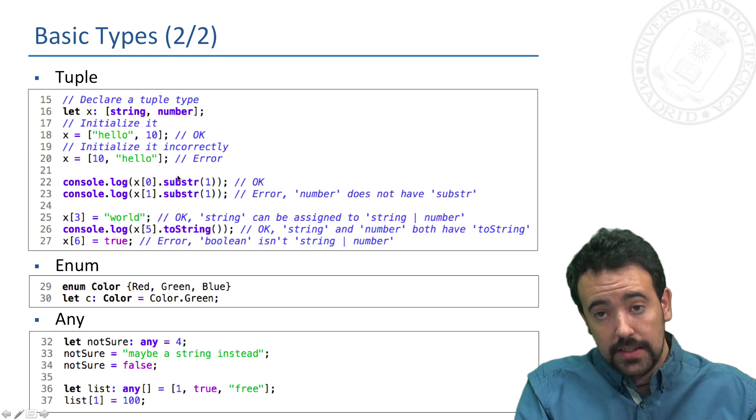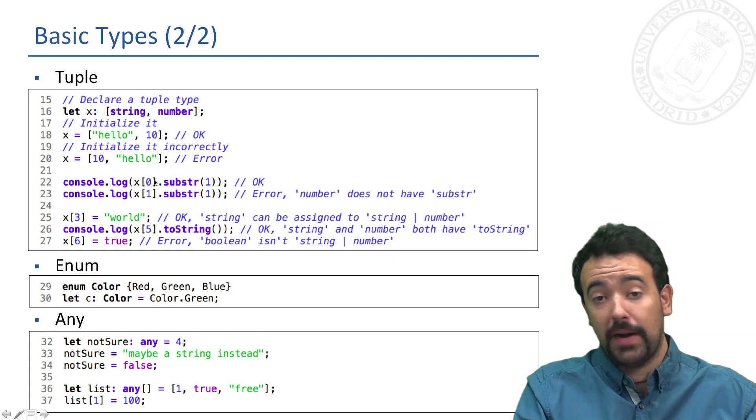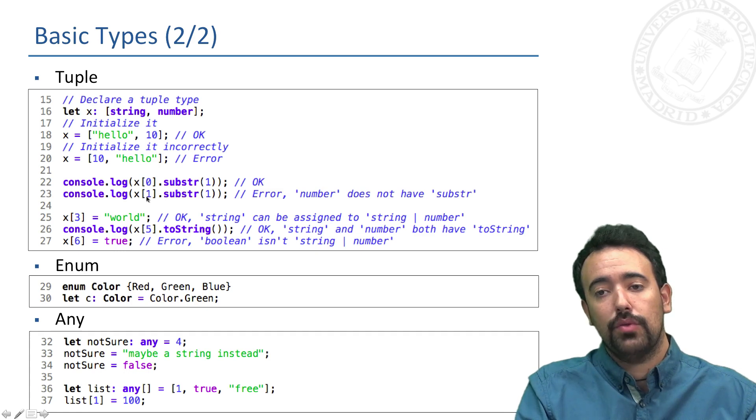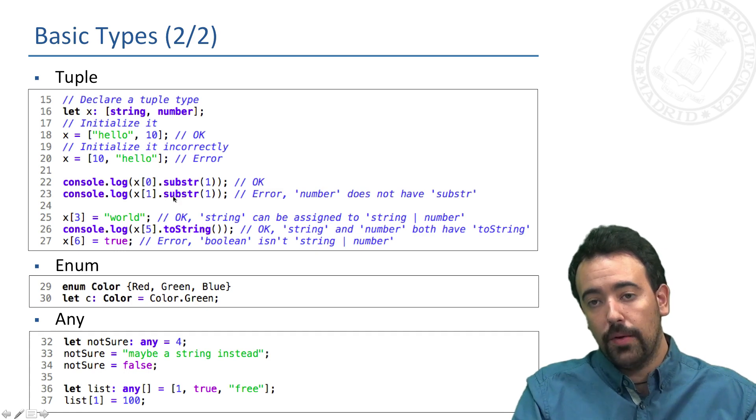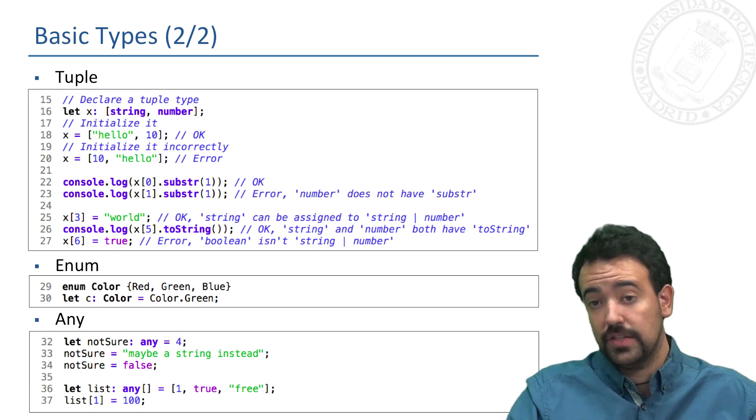Of course this also applies to the methods we apply to the values. For instance, here we can call the method substring of the first parameter of our tuple because it's supported by string types. But if we try to execute this method on the second component, the compiler will throw an error because type number does not support the substring method.